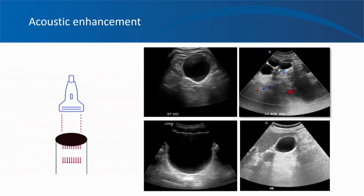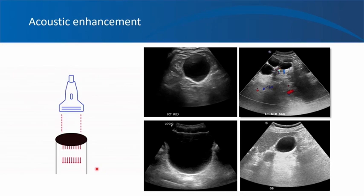The next important artifact is acoustic enhancement. When the ultrasound beam encounters a structure that is an excellent transmitter of sound waves, such as a cyst, the amplitude of the beam beyond this structure is relatively increased compared to the surrounding tissue at the same depth. This phenomenon is the opposite of acoustic shadowing and is called acoustic enhancement. It is helpful in diagnosing cystic lesions, but remember that any localized clear fluid collection — such as the gallbladder, urinary bladder, or large blood vessels — can demonstrate enhancement.